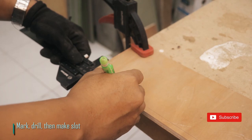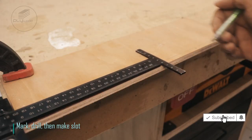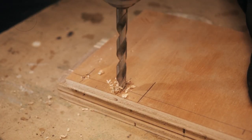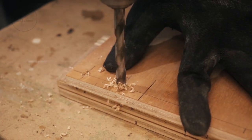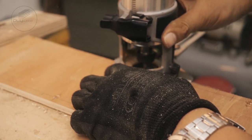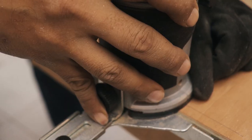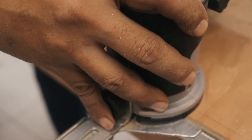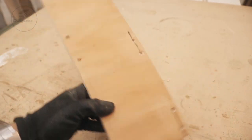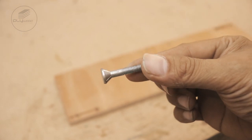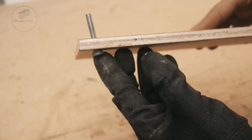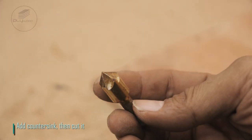Mark, drill, then make slot. Add countersink, then cut it.